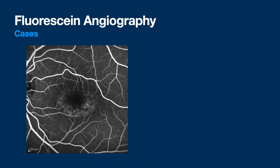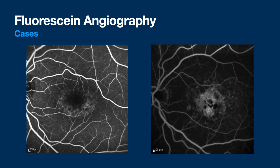Here's another ABCA4-positive patient — similar appearance but with more central involvement, more staining, and look how dark the background is. It's quenched — this is more the typical Stargardt presentation with a dark choroid. However, it's actually not as common as we used to say. Now that we can test everybody for Stargardt, we're finding a lot more people have it than we thought, and dark choroid is not nearly as common as previously believed.